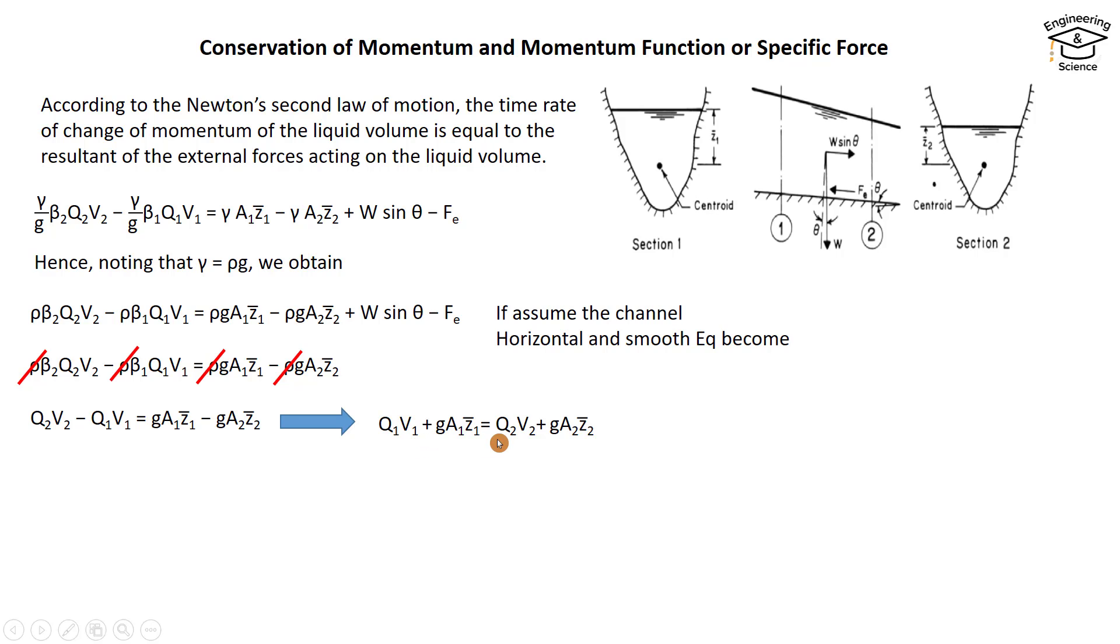Further rearrangement gives us this form of the equation. By dividing the entire equation by g, we obtain this simplified version.